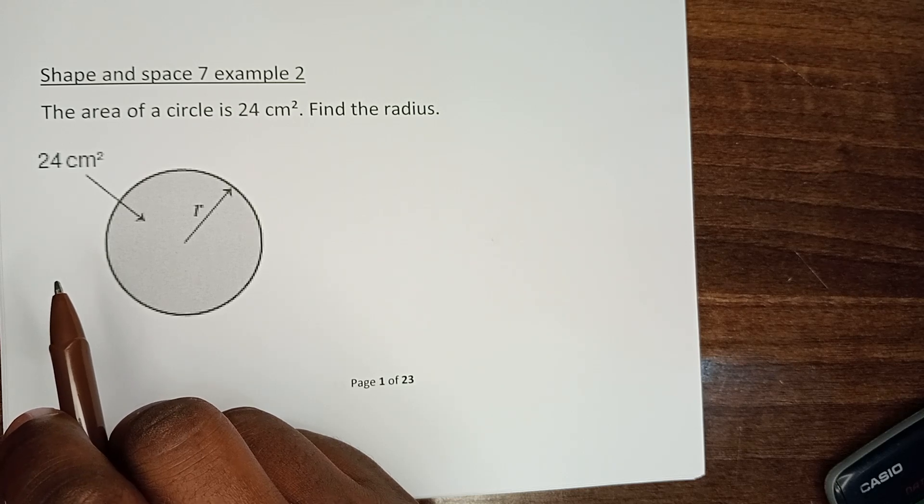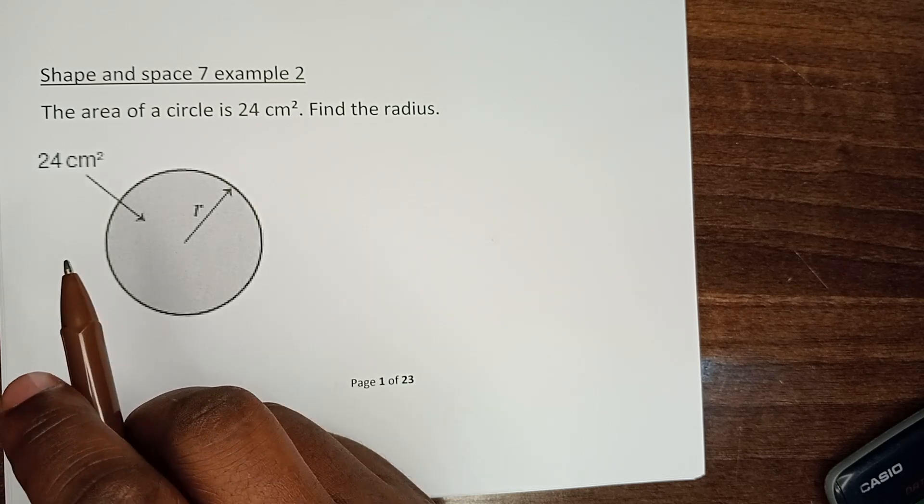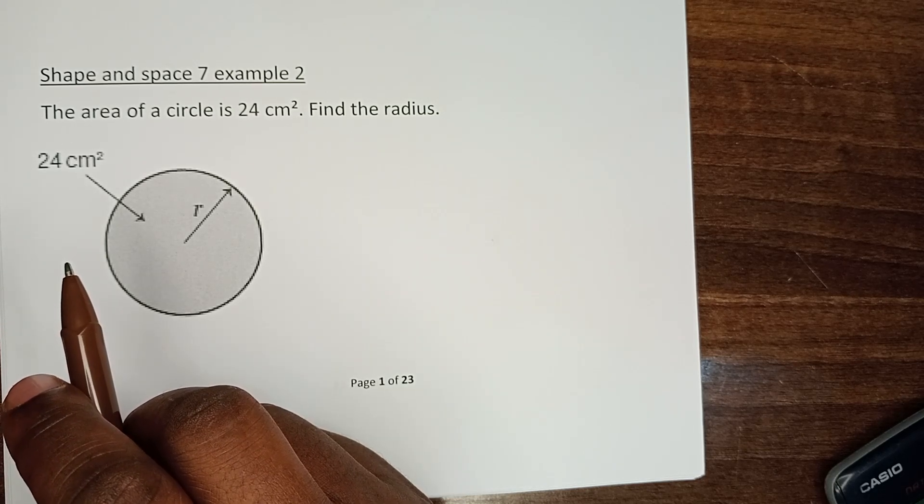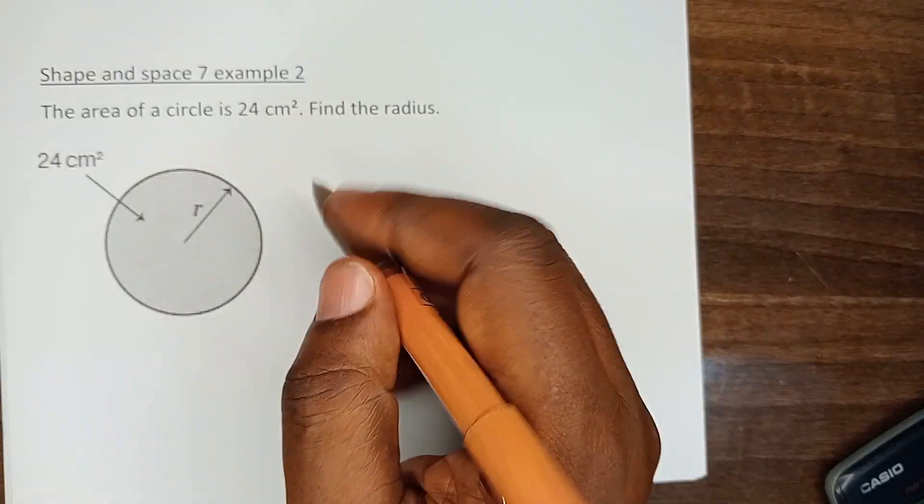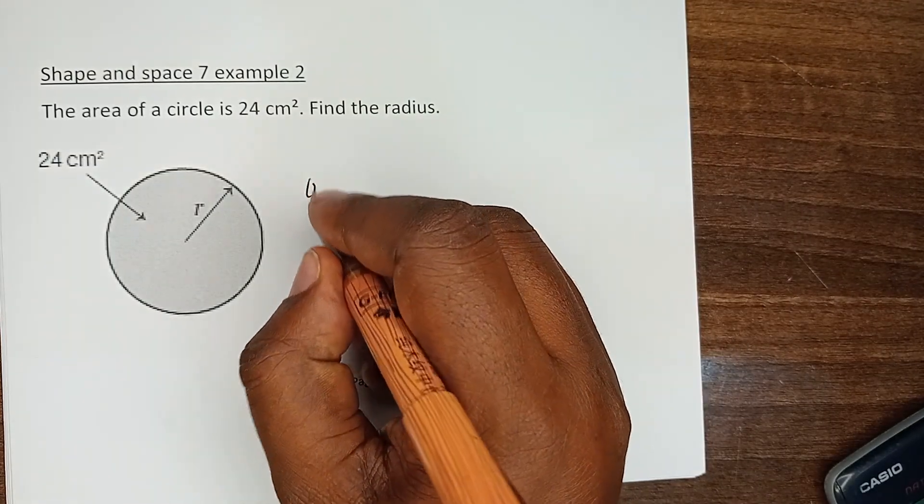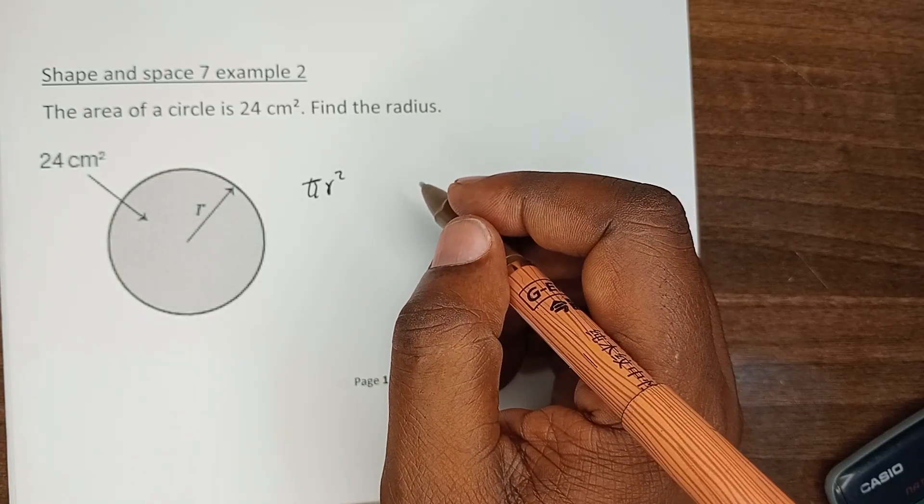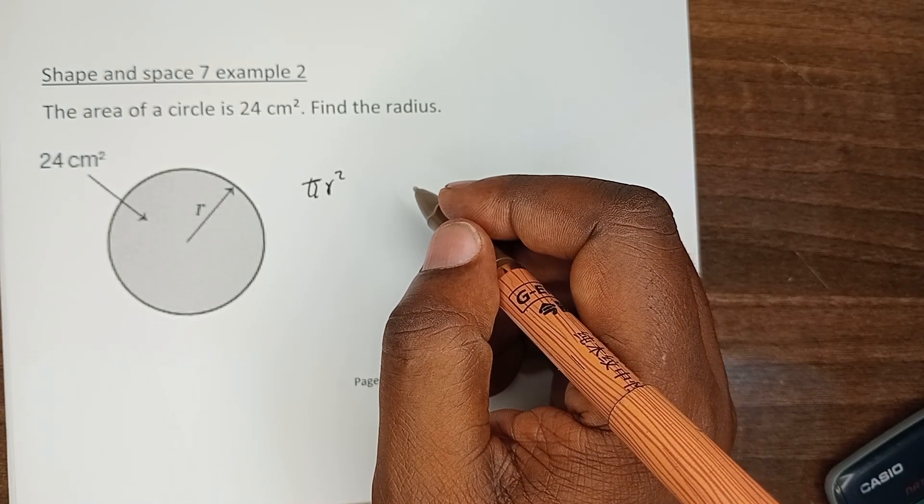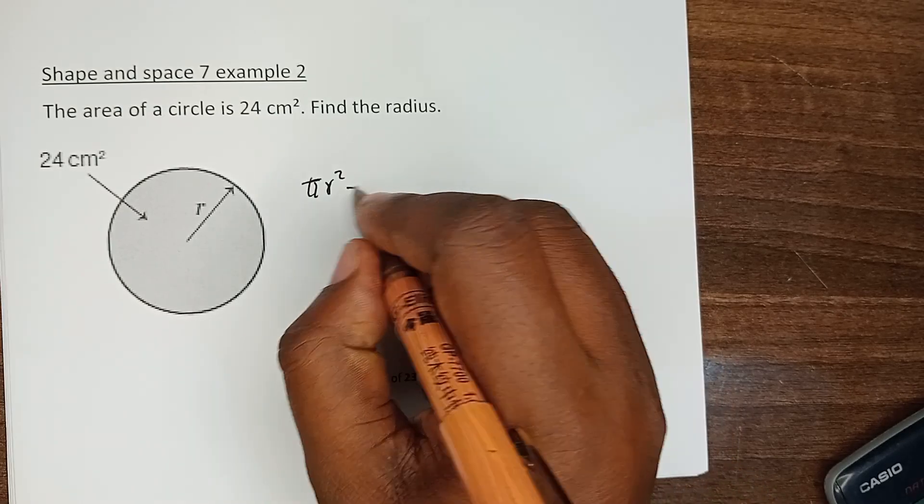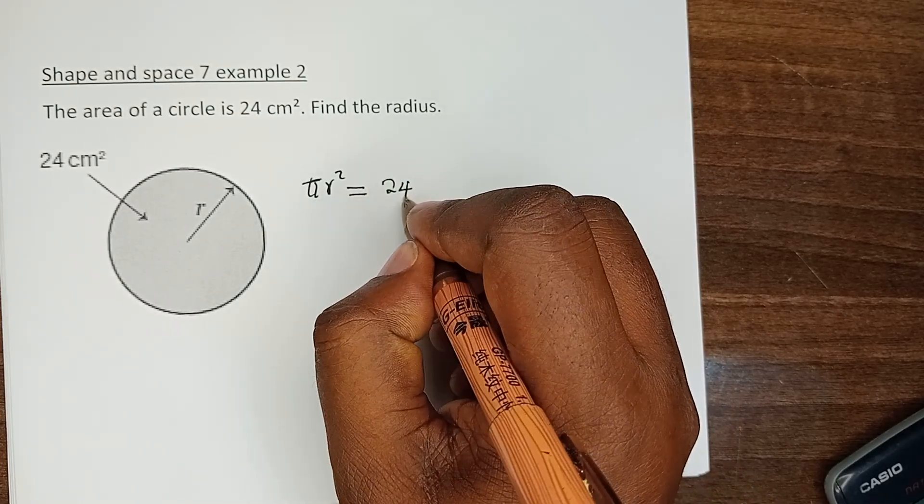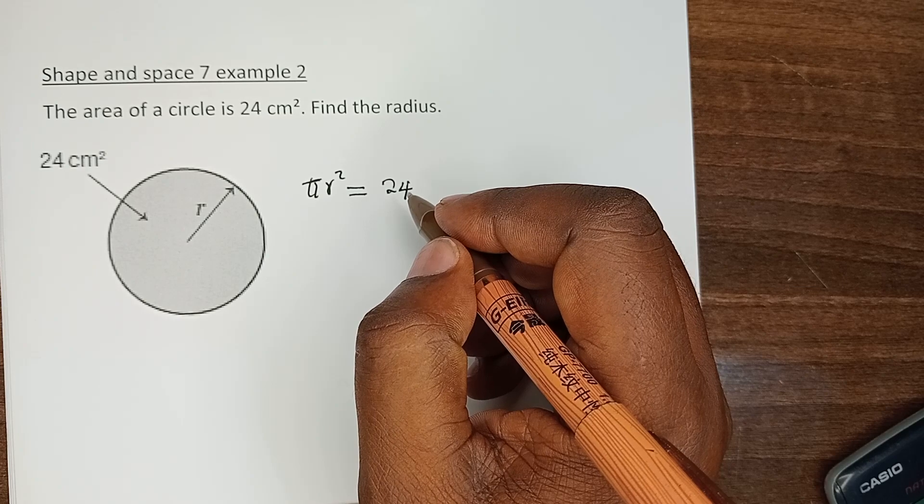Since we know the formula for finding the area of the circle, we are going to say πr² - that is the formula for finding the area of a circle - which is giving us 24 centimeters squared.